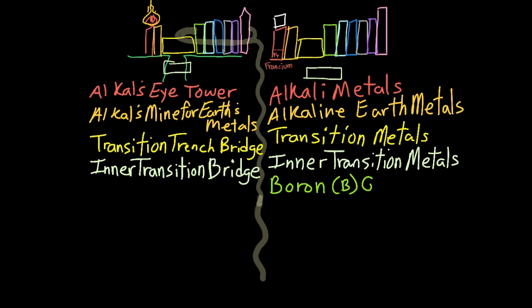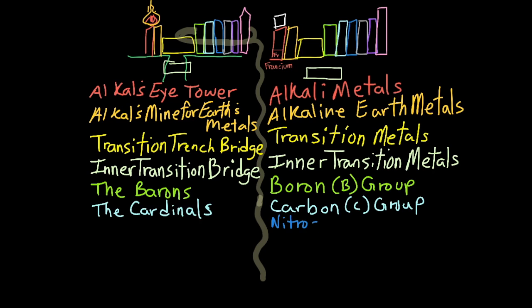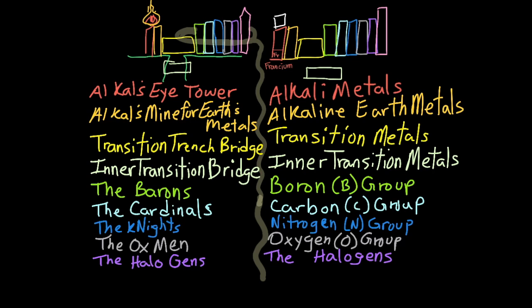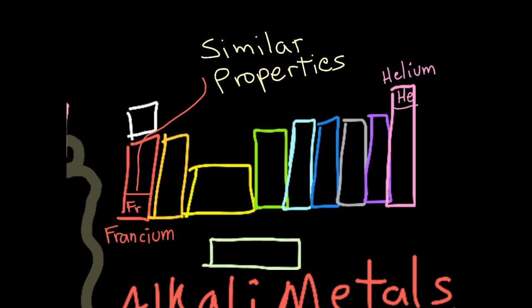Now we have four groups named for the element at the top: the Boron Group, the Carbon Group, the Nitrogen Group, the Oxygen Group. Finish it off with the Halogens and the Noble Gases. Those are the groups. What do they mean? Elements in the same group have similar physical and chemical properties.